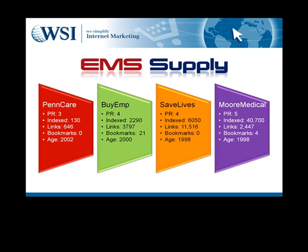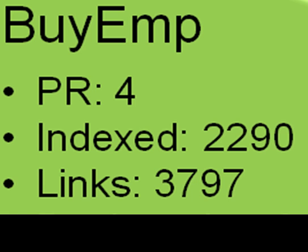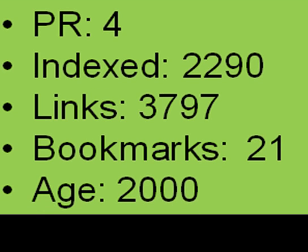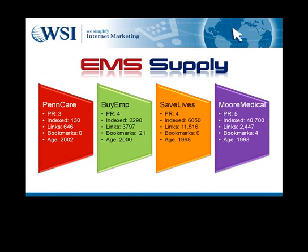So this is really what it could look like after you format it. Here's the power of this tool — you could compare it to their competitors. For example, Buyamp, Save Lives, and More Medical are other websites which are competitors of Pencare. If you're comparing head-to-head and your client asks why their competitors are outranking them or performing better, you can show them that their competitors might have a higher page rank, more indexed pages, more links pointing back to their domain, more social bookmarks, or have been around for a longer period of time. This will really justify how much SEO work you have to do to match your competitors.